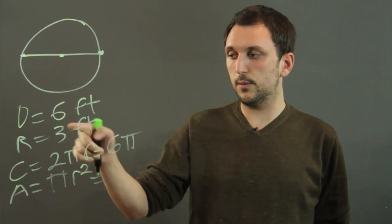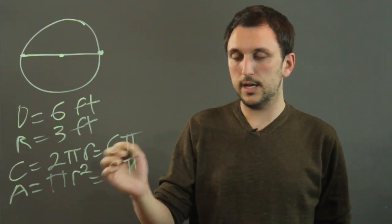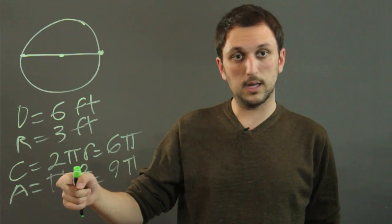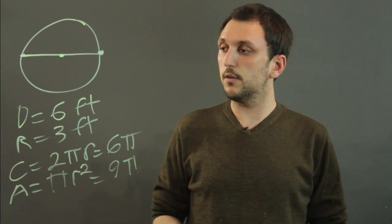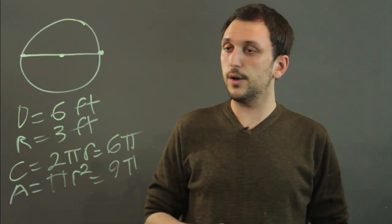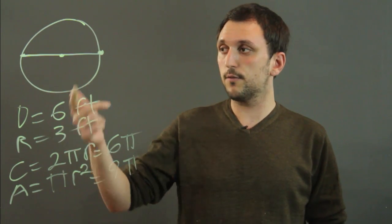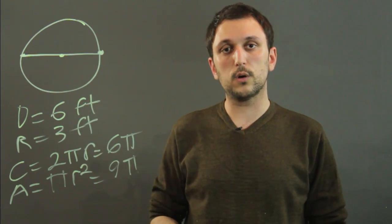In this case that would be 9 pi because 3 squared is 9 times pi. So I'm Charlie Kesov and you just learned how to find the radius from the width or diameter of a circle.